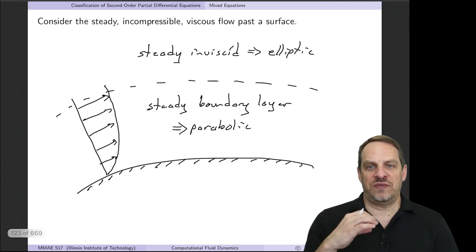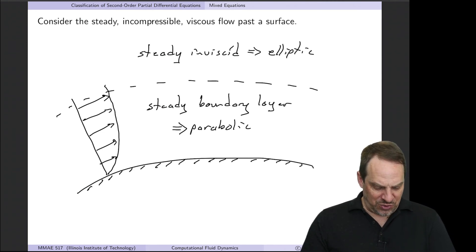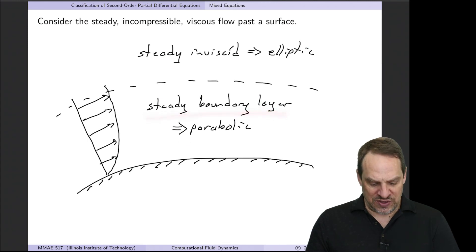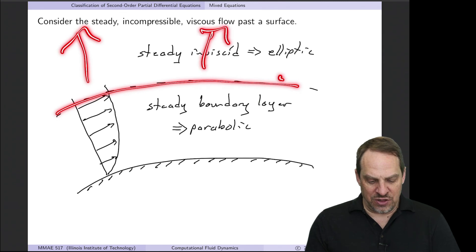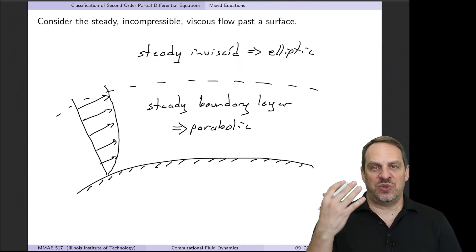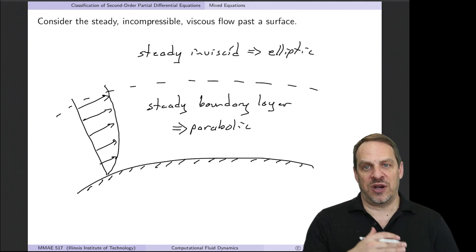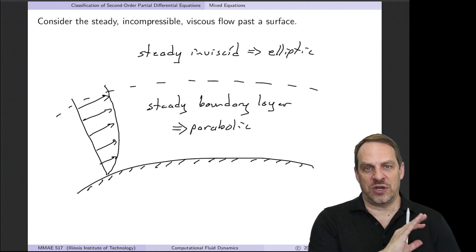Another possibility is having different governing equations in different regions with different characters. For example, inside the boundary layer the steady boundary layer equations are parabolic, while outside the boundary layer the steady inviscid flow equations are elliptic. These mixed cases are obviously much more complex. We'll focus on situations where the entire flow domain is purely parabolic or purely elliptic in the coming videos.